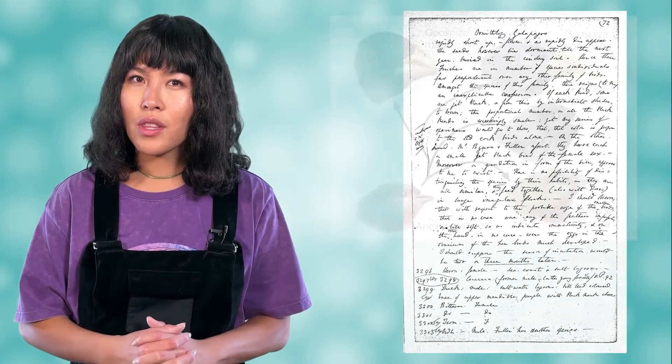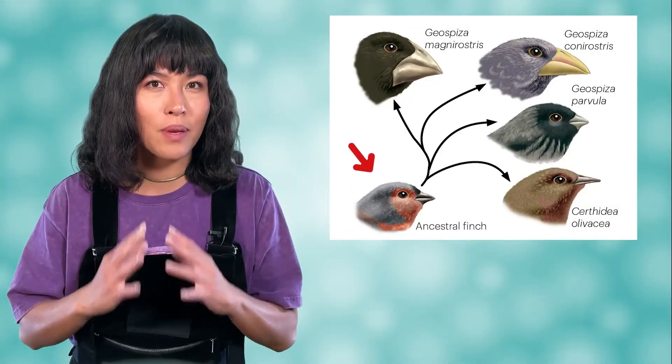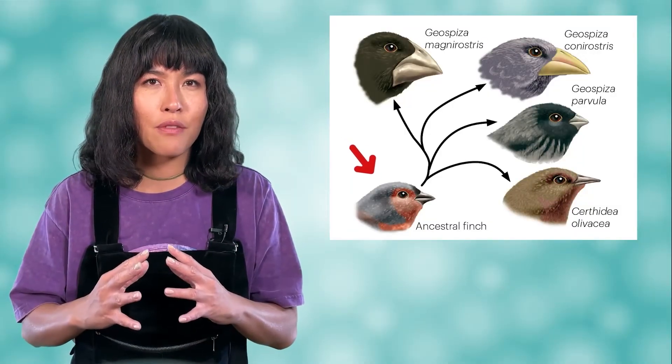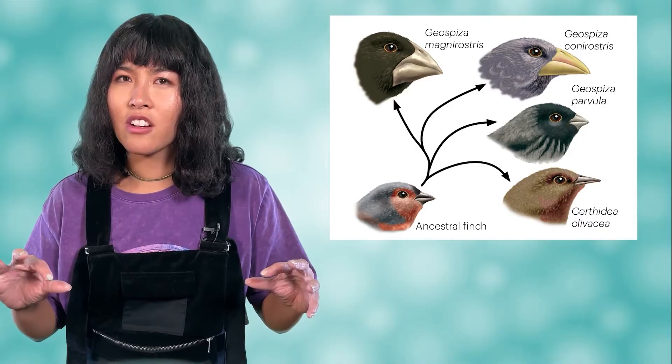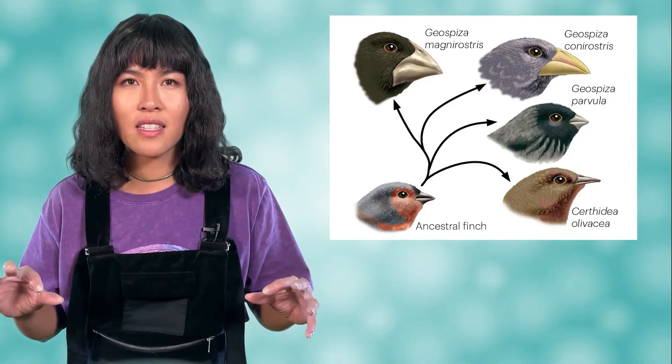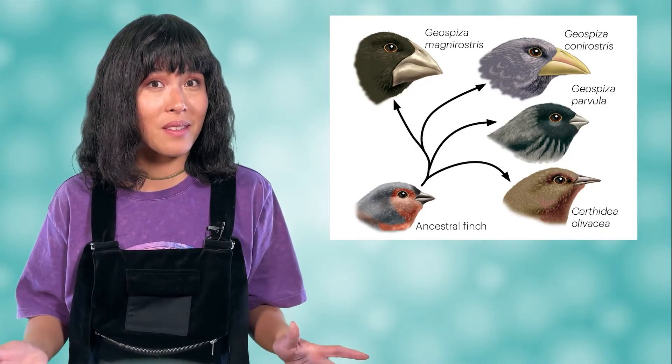Darwin's observations left him with more questions to ponder. The species he saw seemed related to what he had seen before, but distinctly different — and their differences did not appear to be random, but rather gave the animals specific adaptations that helped them survive in their environment. A revolutionary idea began to form: could they all have originated from the same species, but begun to diverge as they were isolated on different islands and needed to adapt to different environments?